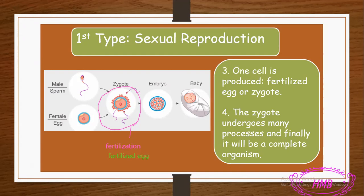There are four steps for sexual reproduction. First, you must have a male and a female with sex cells — sperm and ovule — and they must meet. Second, this meeting is called fertilization. Third, from fertilization one cell is produced called the fertilized egg, also known as the zygote. Fourth, the zygote undergoes many divisions until it becomes a complete living organism — a complete baby, either inside an egg or as a newborn inside the mother.